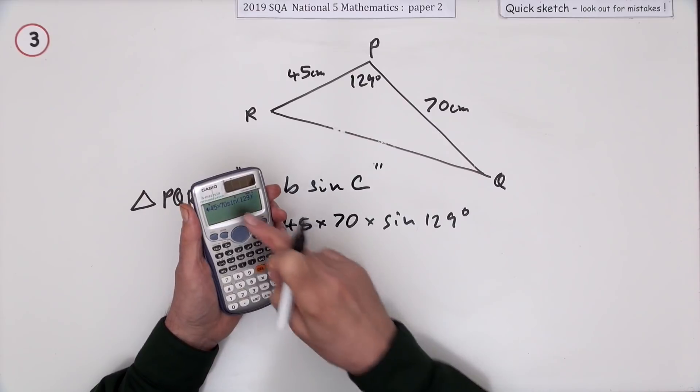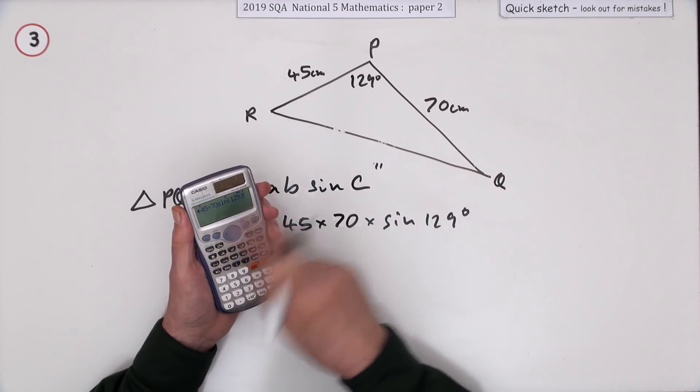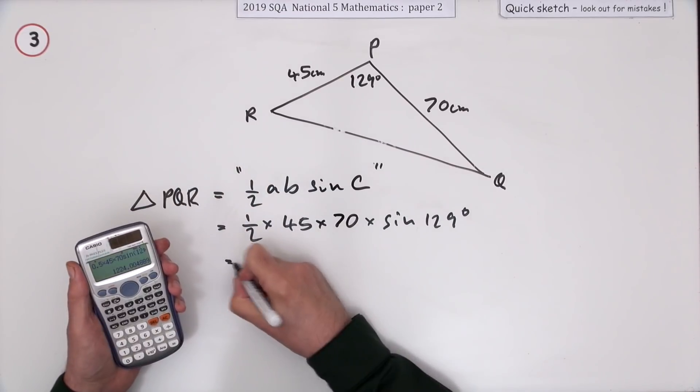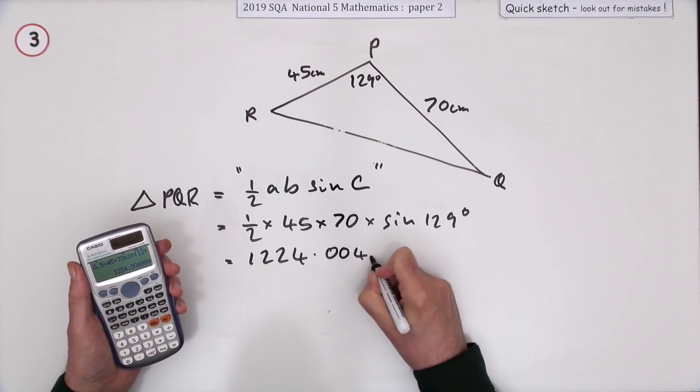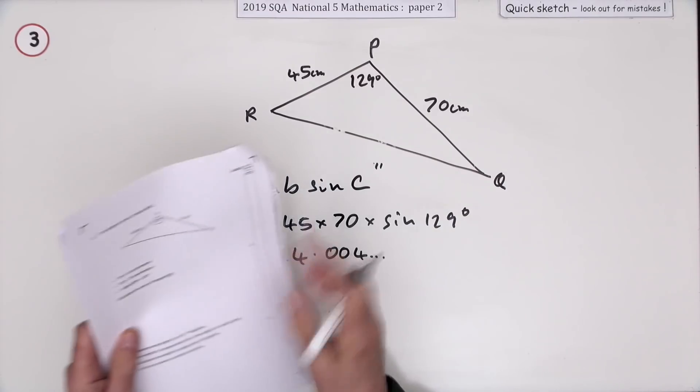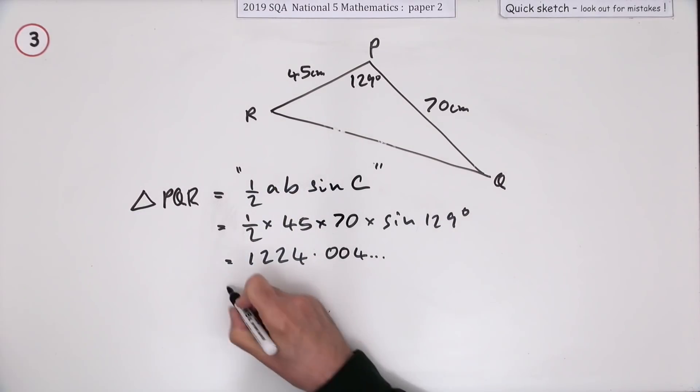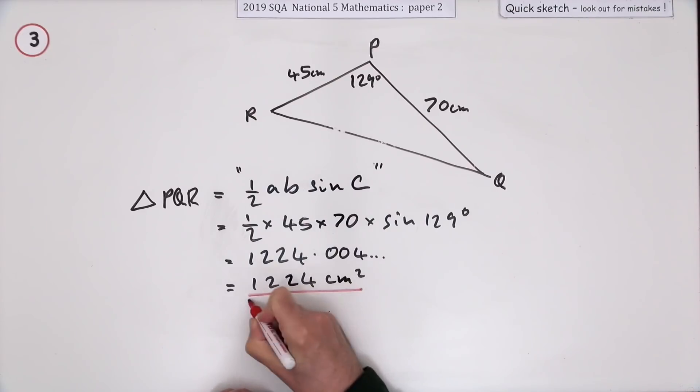Put it into your calculator, making sure it's in degrees, because those are degrees you've got there. You put them into your calculator, press the button, and you get 1224.008448 and so on. It doesn't say anything about rounding your answer off, so I think 1224 centimeters squared should do because that's got four significant figures in it, which is more than any of those had.